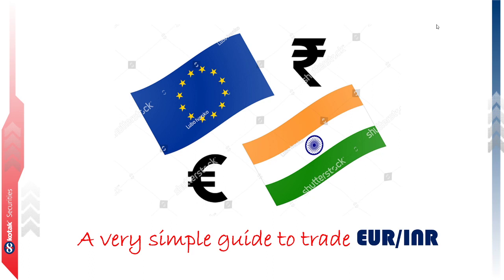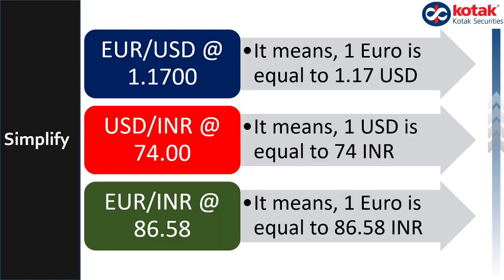You will understand why I started with the analogy of cricket. First, a short slide on the conventions. Euro dollar at 1.17, dollar rupee at 74, and Euro INR at 86.58 — what do they all mean?